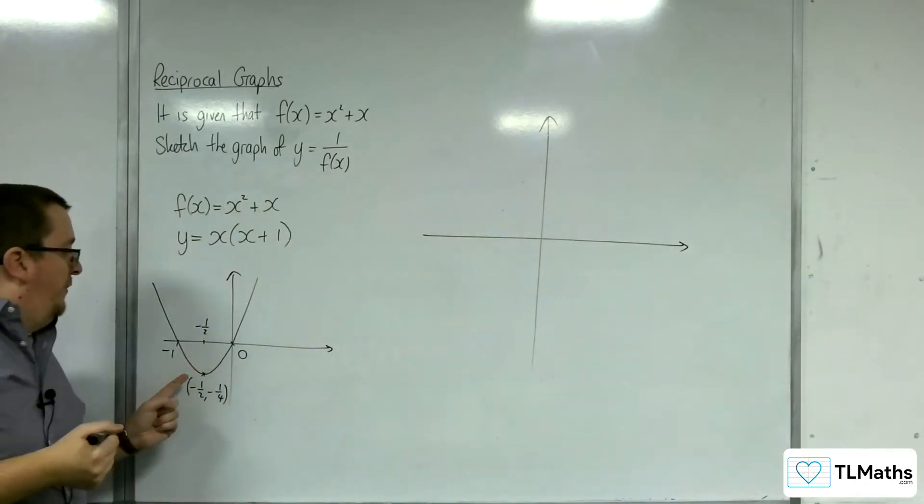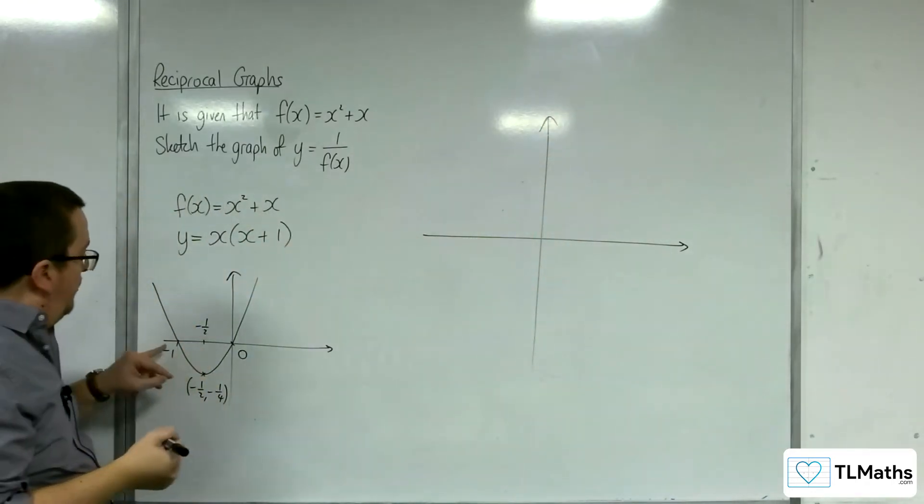Where this crosses the x-axis will have vertical asymptotes, so -1 and 0.